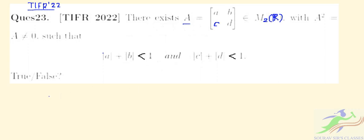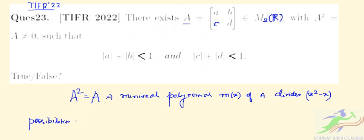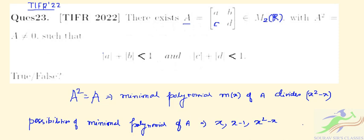From the given condition A² = A, the minimal polynomial of A must divide x² - x. So the possibilities for the minimal polynomial of A are: x, x - 1, or x² - x.